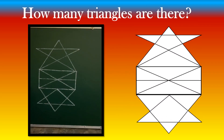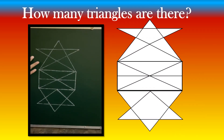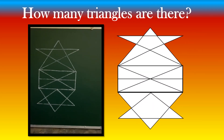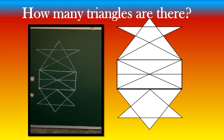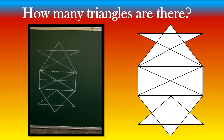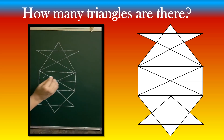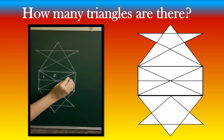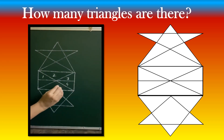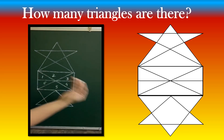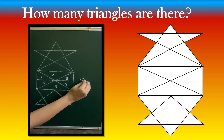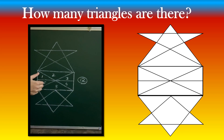Let's count the number of triangles in this whole figure — three figures joined together: a rectangle, a star, and a star. Let's start from the rectangle: 1, 2, 3, 4, 5, 6. We have to double it, so 12 triangles in this rectangular part.